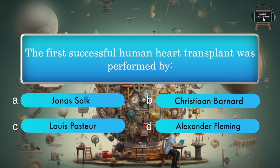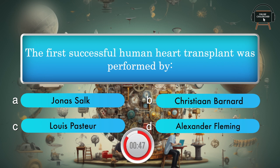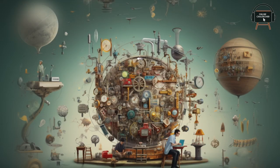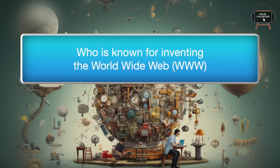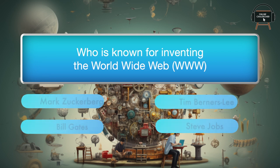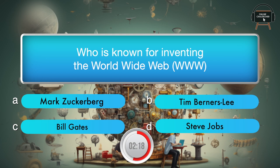The first successful human heart transplant was performed by: Jonas Salk, Christiaan Barnard, Louis Pasteur, Alexander Fleming. Answer: Christiaan Barnard. Who is known for inventing the World Wide Web? Mark Zuckerberg, Tim Berners-Lee, Bill Gates, Steve Jobs. Answer: Tim Berners-Lee.